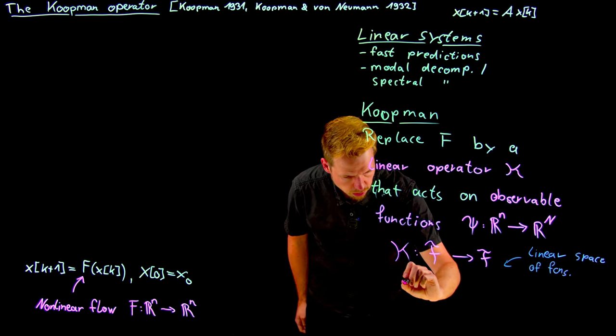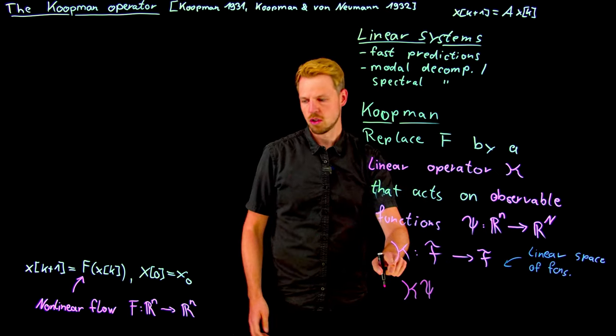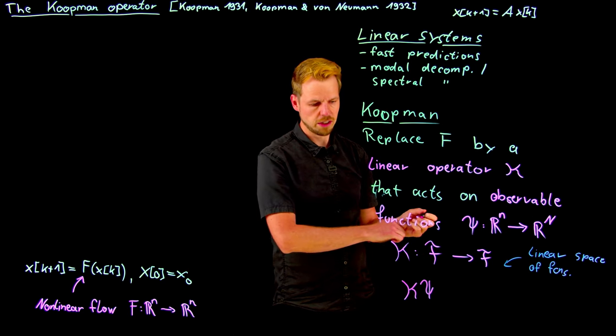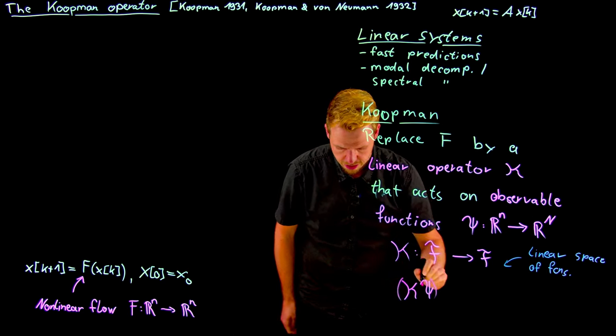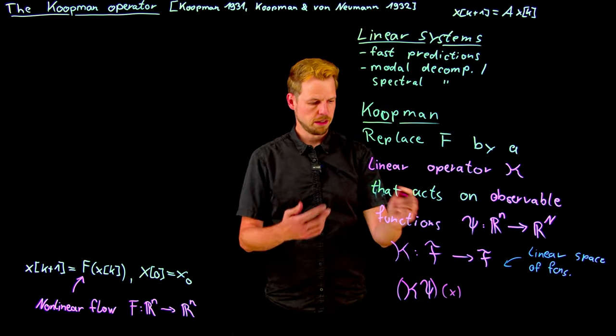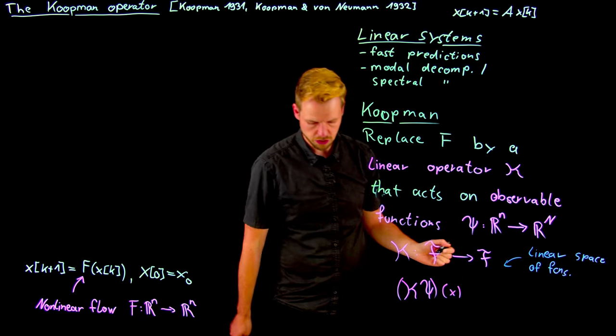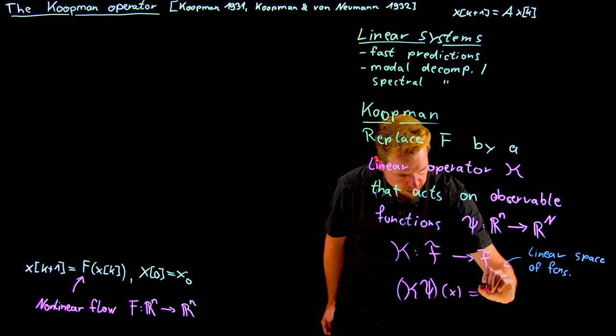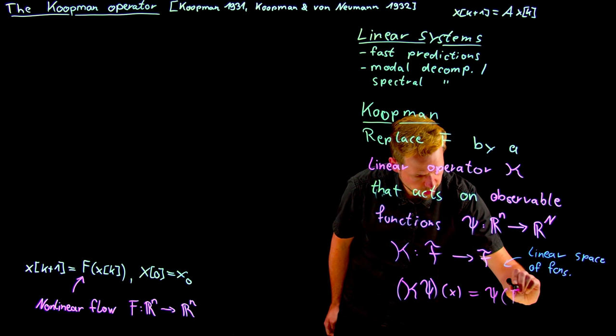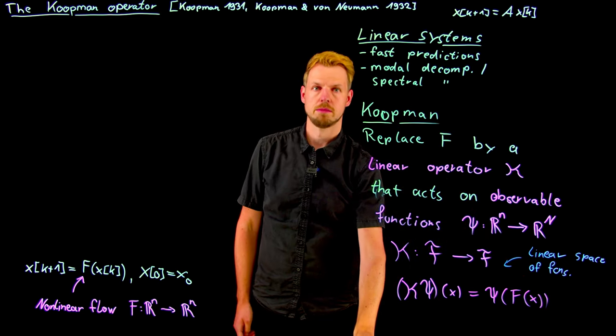And the Koopman operator now is the operator that composes with the flow. So what we can say is or what we simply define is that the operator does not act on state space or on the state x, but on the observable function psi. And then if we evaluate the state or plug in the state into this new observable function, what we essentially get is the observable function composed with the flow, meaning that we observe the system at the next time step.